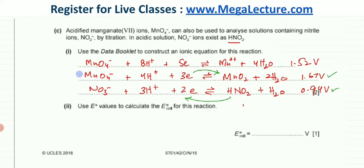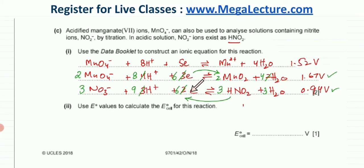The equation above should be multiplied by 2, so it would become 8H⁺, this would become 6 electrons, 2 would appear here and this would become 4. The equation below should be multiplied by 3, so this would become 9H⁺ and this would become 6 electrons, multiplying by 3 gives 3H₂O. Now you can see that the number of electrons gained and the number of electrons lost are equal.